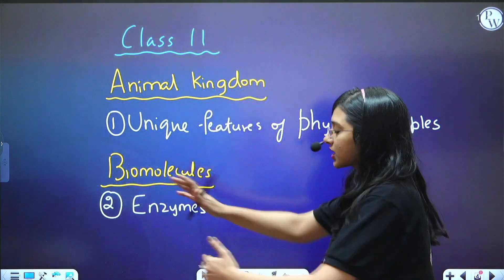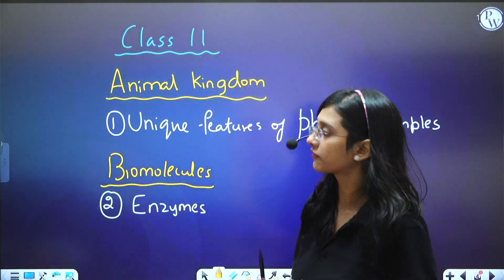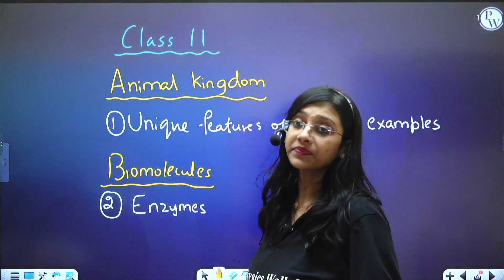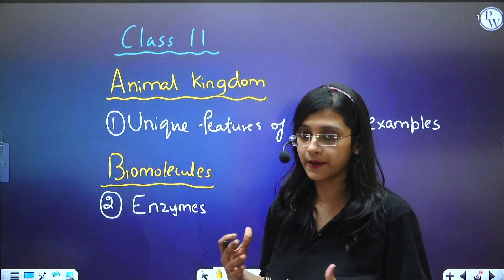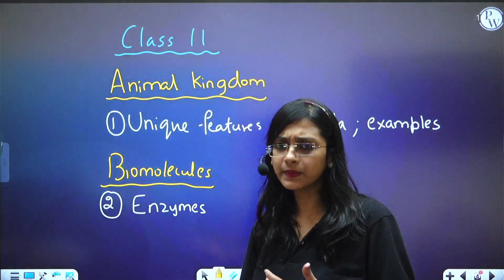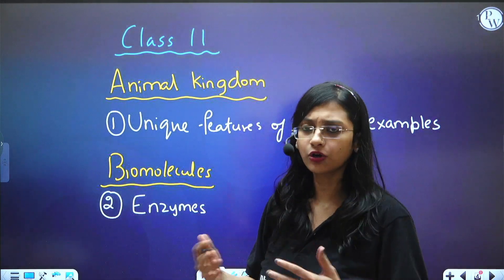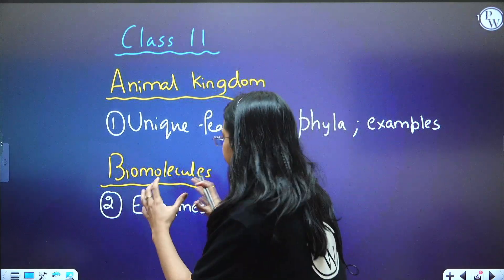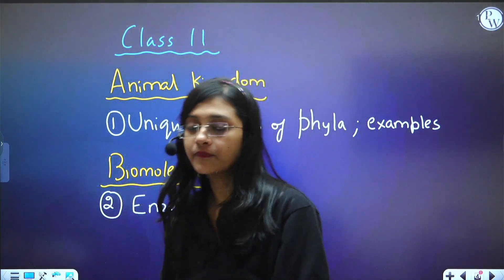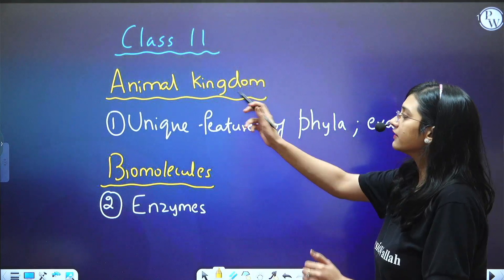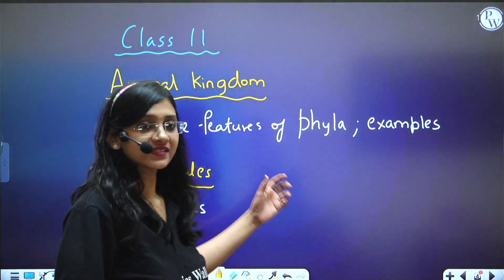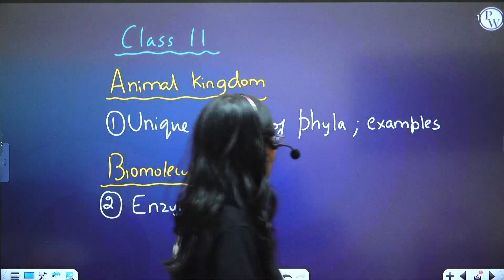The next chapter is Biomolecules from Class 11. From this chapter, enzymes are very important — it might be about inhibitors, competitive inhibition, and such concepts. Enzymes is quite an important topic because questions are coming from it. Similarly in Animal Kingdom, you also have to study examples with their scientific names.